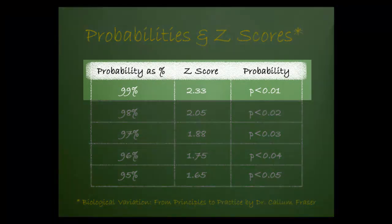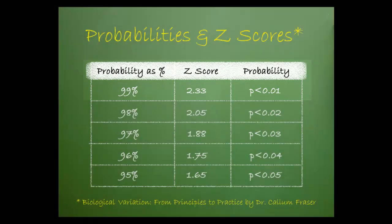If we desire to include 99% of the values within our target limits, then we need to use a z-score of 2.33. This equals an inclusion probability of p less than 0.01.